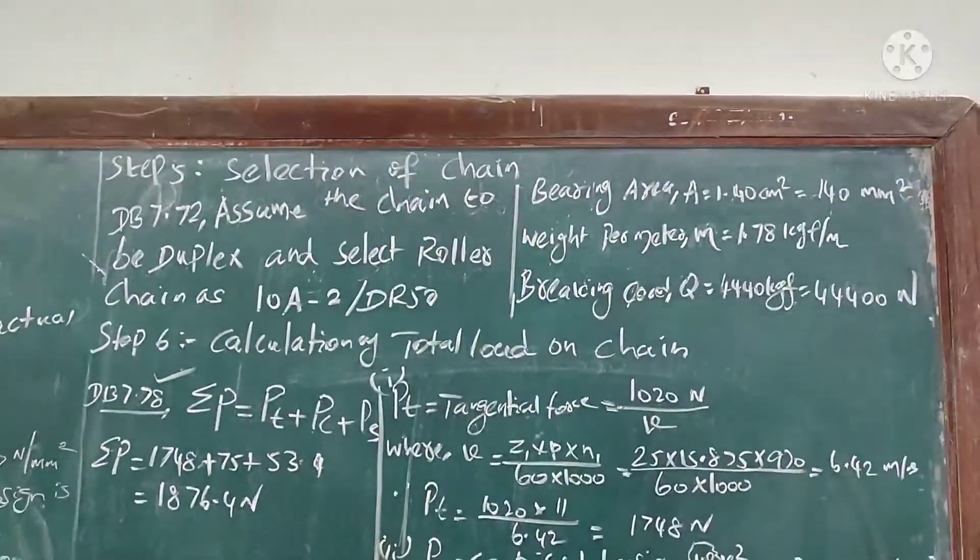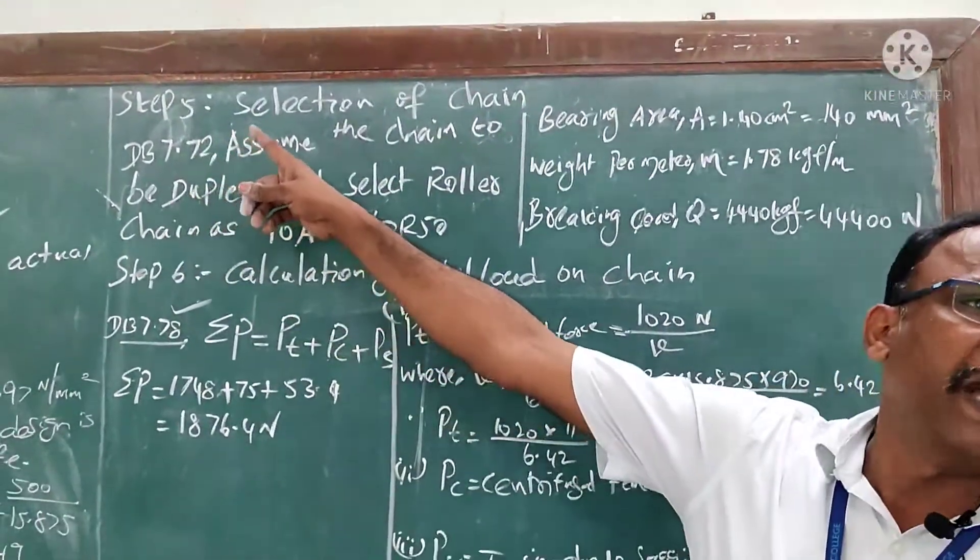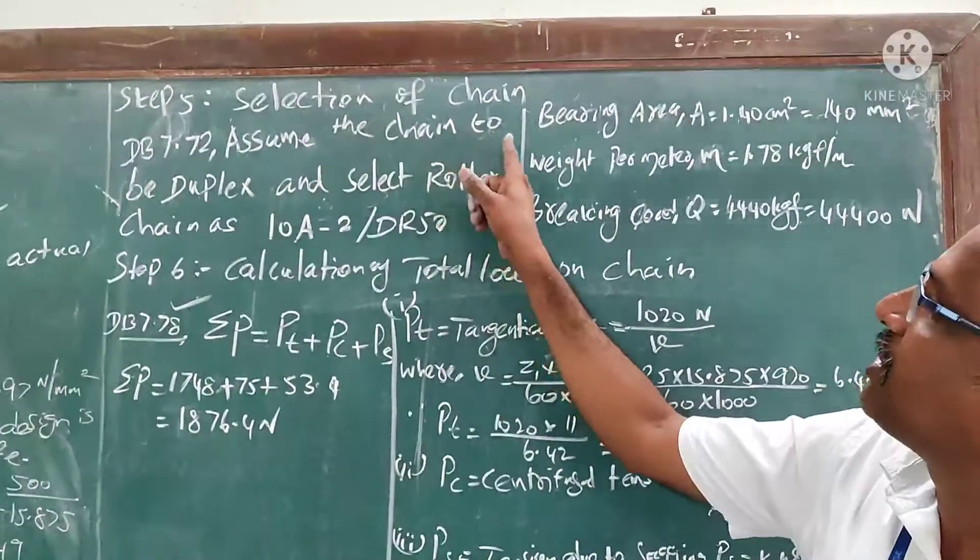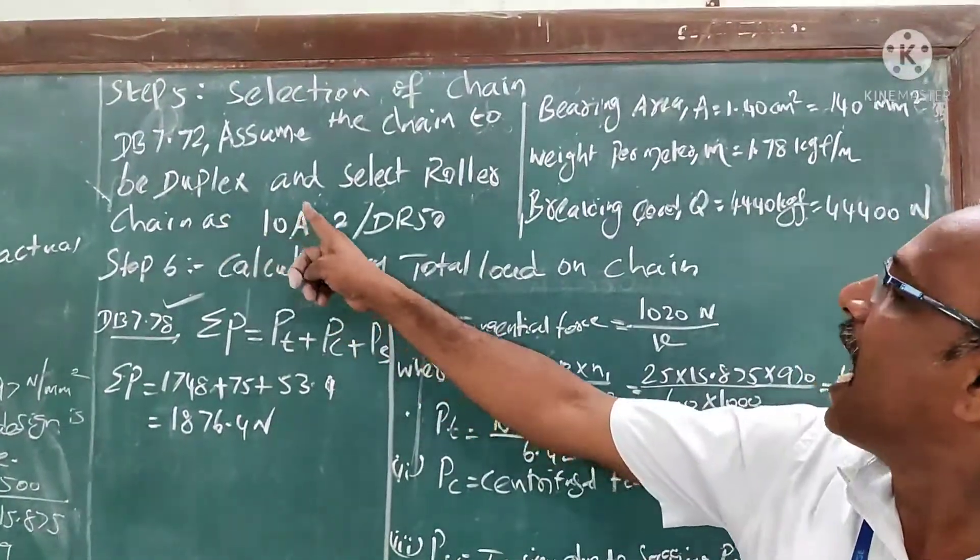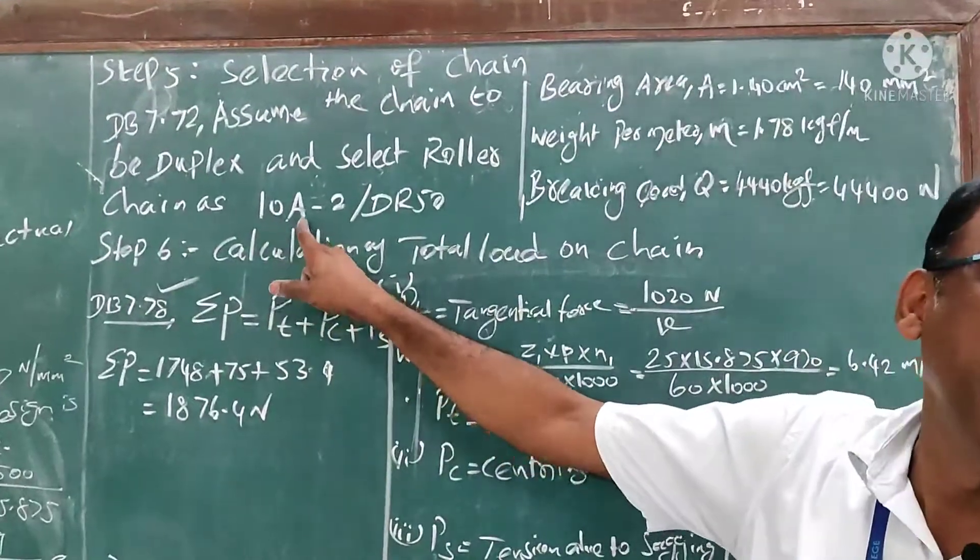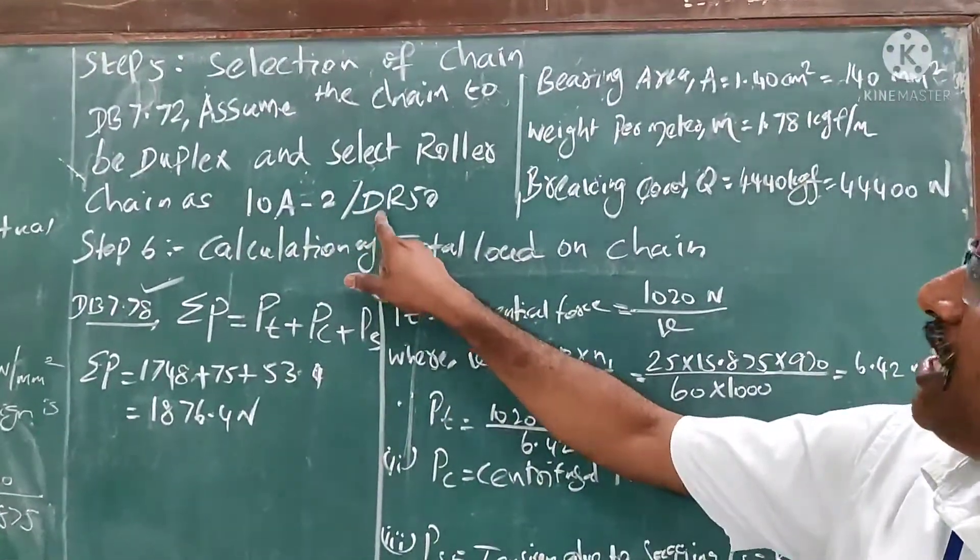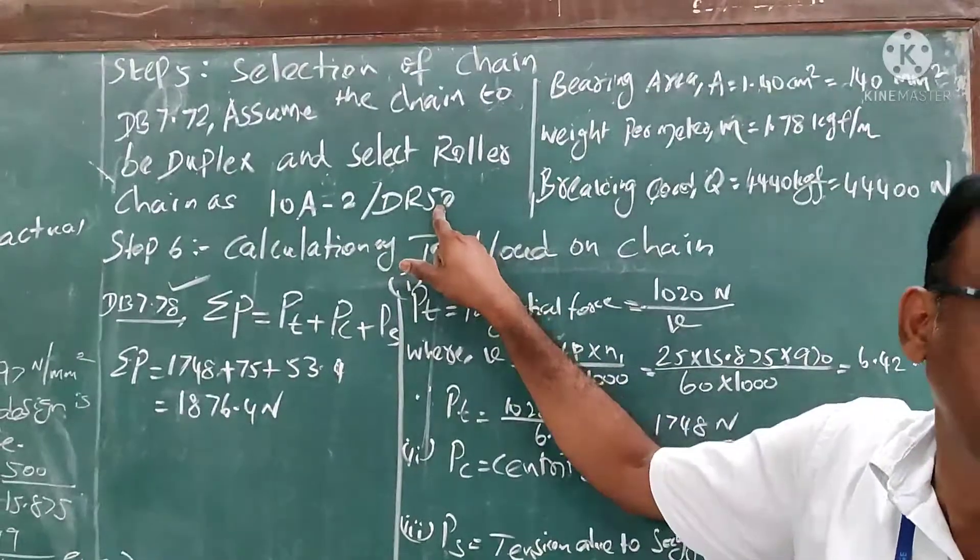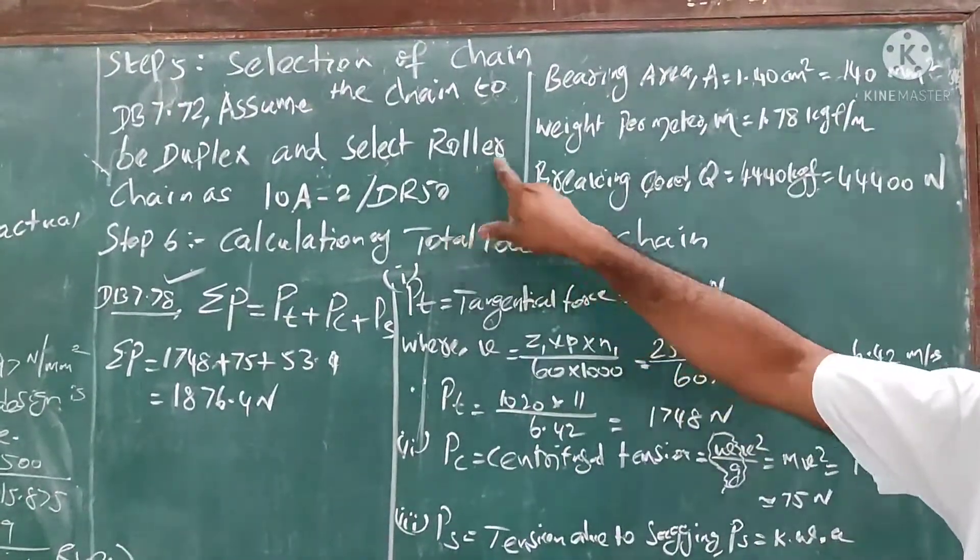Step number five: selection of chain. From data book 7.72, assume the chain to be a duplex and select the roller chain as 10A-2/TRI50. TR is duplex type of chain. For this chain,